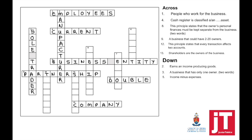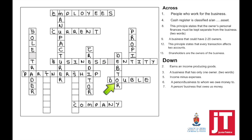Question number five: income minus expenses is called profit. Number six: a person or business to whom we owe money to — so when we owe money to somebody else as a business, that will be called creditors. Number seven: a person or business that owes us money. When we're talking about us, we're talking about our business — people who owe our business money are called debtors.